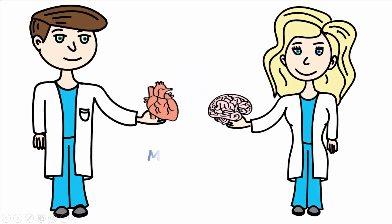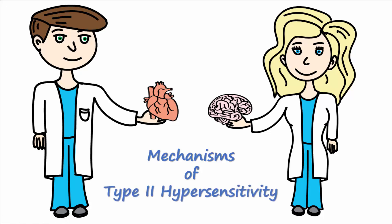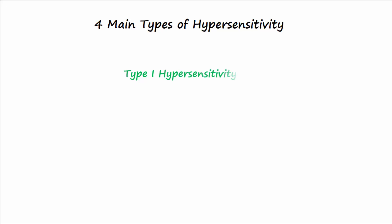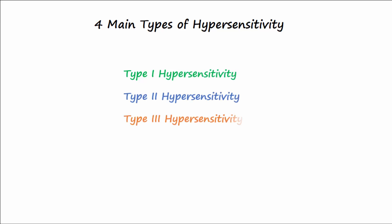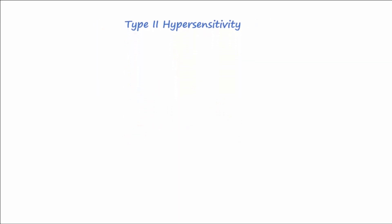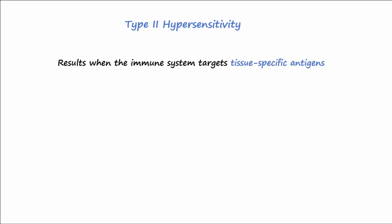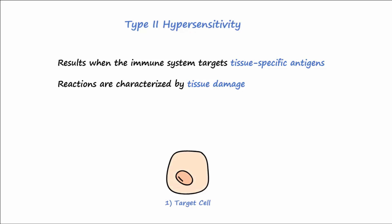Let's discuss the mechanisms of type 2 hypersensitivity. Recall that there are four main types of hypersensitivity. Type 2 hypersensitivity results when the body's immune system targets tissue-specific antigens to cause damage or dysfunction. In each case, a type 2 reaction involves a target cell, an antigen expressed on its surface, and the antibodies that bind to these antigens.